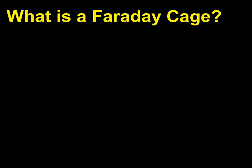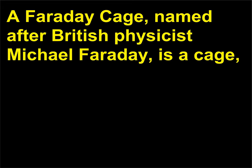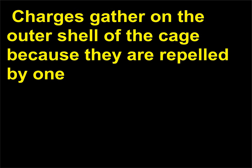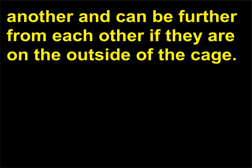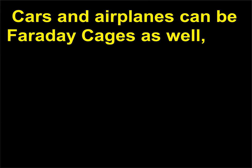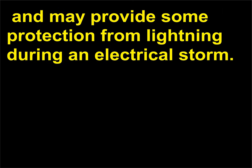What is a Faraday cage? A Faraday cage, named after British physicist Michael Faraday, is a cage, metal grating, or metallic box that can shield electrical charge. Charges gather on the outer shell of the cage because they are repelled by one another and can be further from each other if they are on the outside of the cage. This results in no charge within the Faraday cage. The metal sphere of a Van de Graaff generator is a Faraday cage. Cars and airplanes can be Faraday cages as well, and may provide some protection from lightning during an electrical storm.